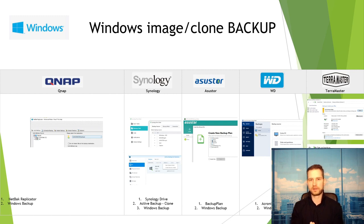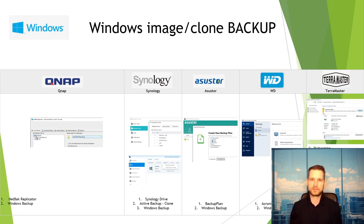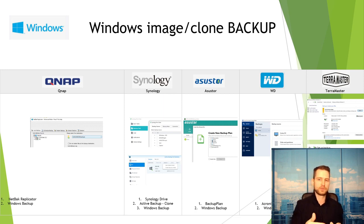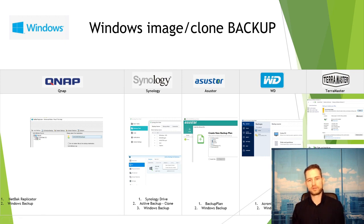ASUSTOR has something called Backup Plan for folder-level backups. TerraMaster is probably the worst — they don't have their own software for folder-level or image backup, so you'd need to use Windows built-in tools. WD also lacks their own software but partners with Acronis True Image, offering a five-year free license — it's advanced software that backs up folders but is not a true image backup despite the name. Clearly the winner for backing up Windows is Synology.